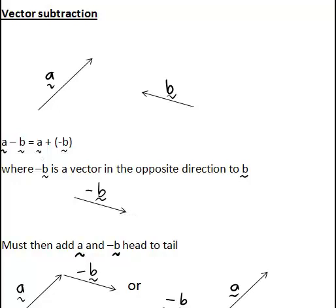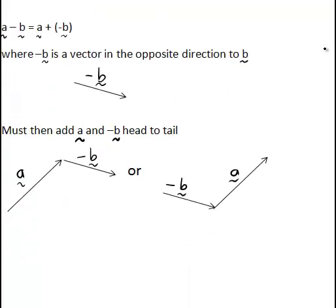And when we're adding a and negative b, we must always add vectors head to tail. So for instance, this could be done as shown on the left, a plus negative b, where this would then correspond to the vector here.